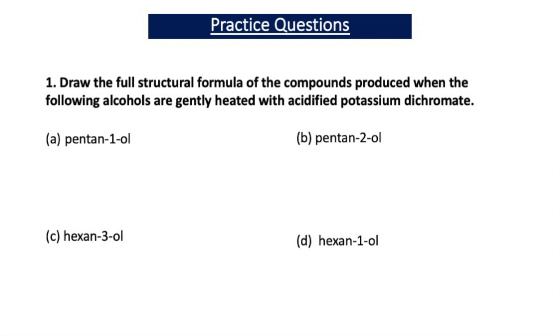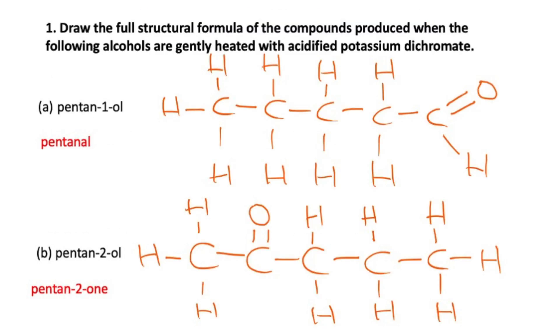Now let's test your understanding with some practice questions. Question 1A asks you to draw the structural formula of the compound you get when you gently heat pentan-1-ol with acidified potassium dichromate. Pentan-1-ol is a primary alcohol, so gently heating it with acidified potassium dichromate partially oxidises it to an aldehyde. The aldehyde is pentanal, with the formula CH3CH2CH2CH2C(=O)H.